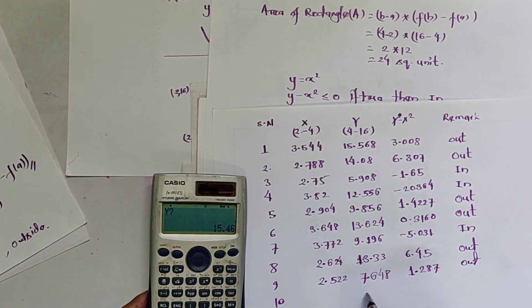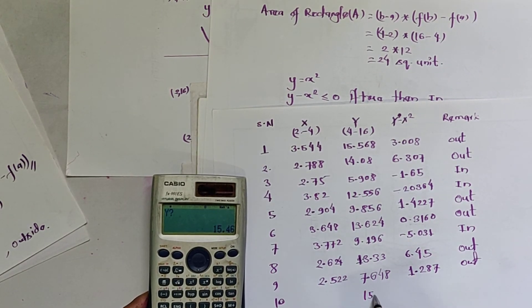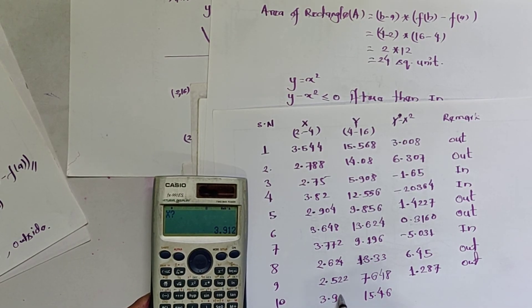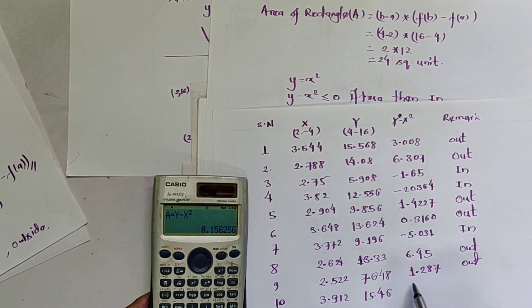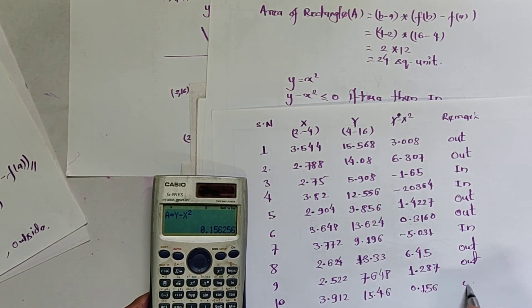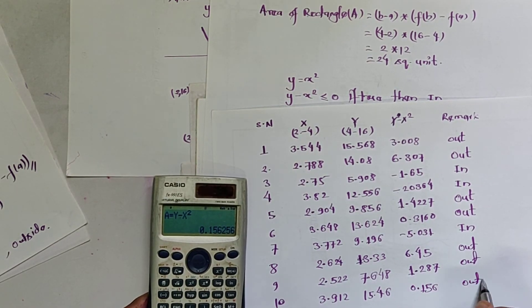For the 10th iteration: y = 15.46, x = 3.912; the value is 0.156, which is positive, so it is also outside the region.